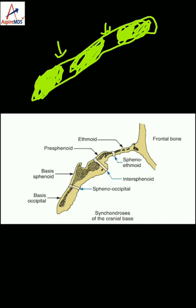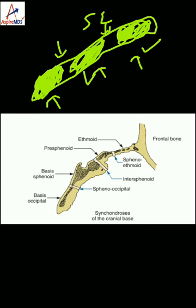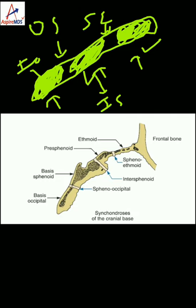In the base of skull, the bones involved are the ethmoid bone, sphenoid bone, and occipital bone. The synchondrosis between the ethmoid and sphenoid is the sphenoethmoidal. Between the two parts of the sphenoid is the intrasphenoid. Between the sphenoid and occipital is the sphenooccipital, and within the occipital bone itself is the intraoccipital synchondrosis.